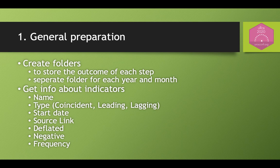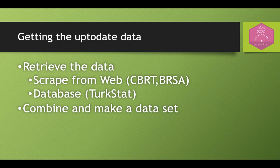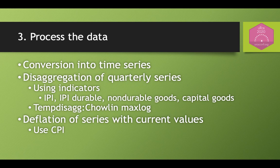Let's proceed with each step in detail. In the first step, the folders to store the outcome of the current period are created, and information about the series are read from an Excel table, such as the name, type, start date of the series, etc. Based on this information, the up-to-date data is scraped from the web and our database and combined in a list. Each series is then converted into a time series object, using the start dates from the info table. Some indicators are published quarterly, so they are disaggregated using some regressors with the Chow-Lin MaxLog method.